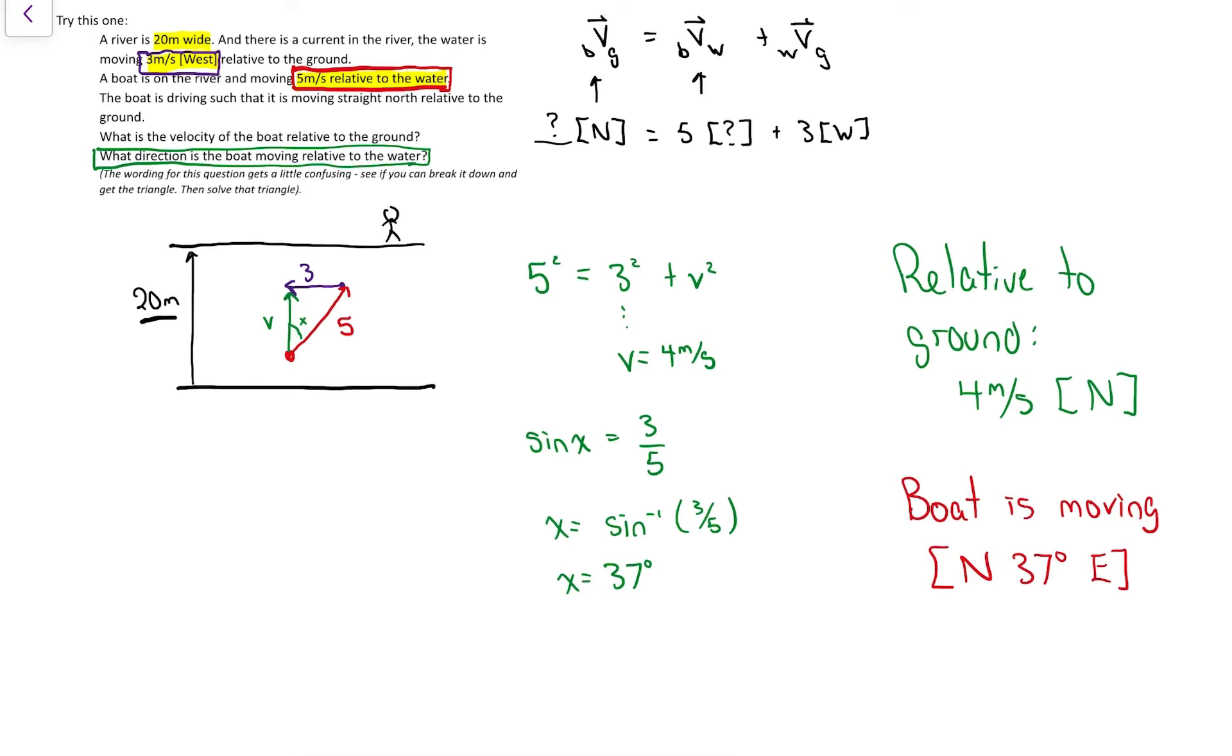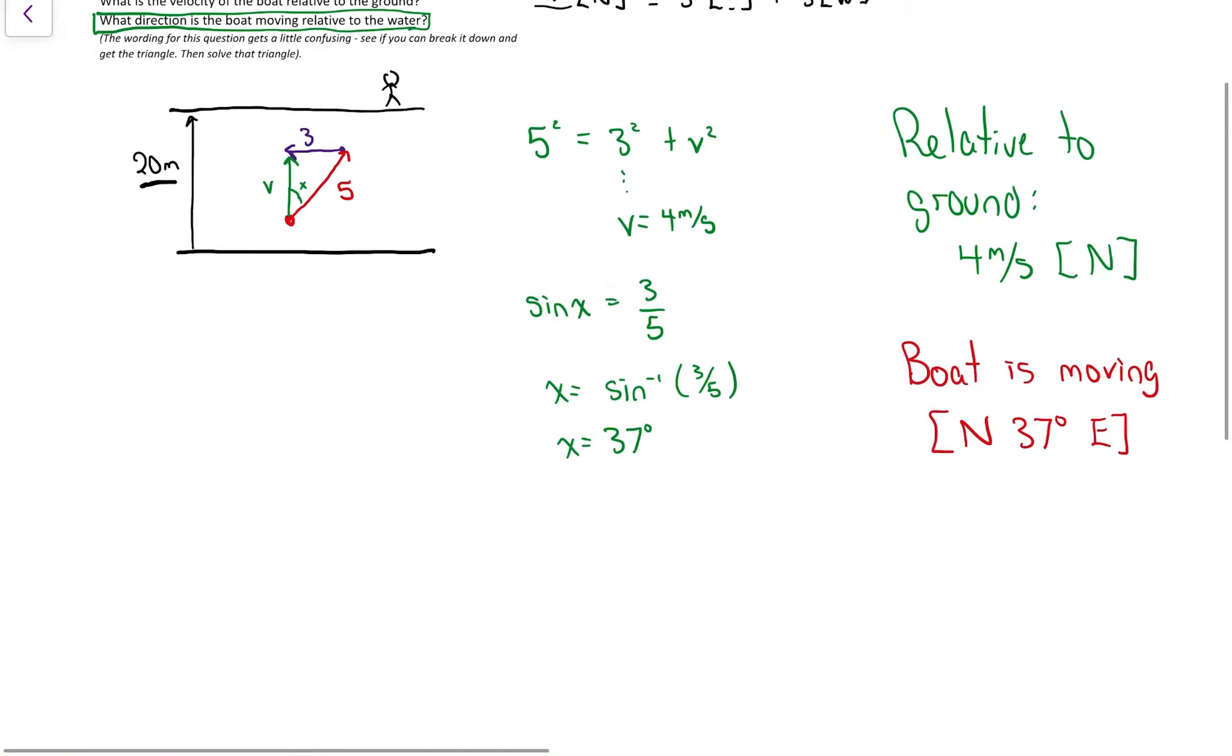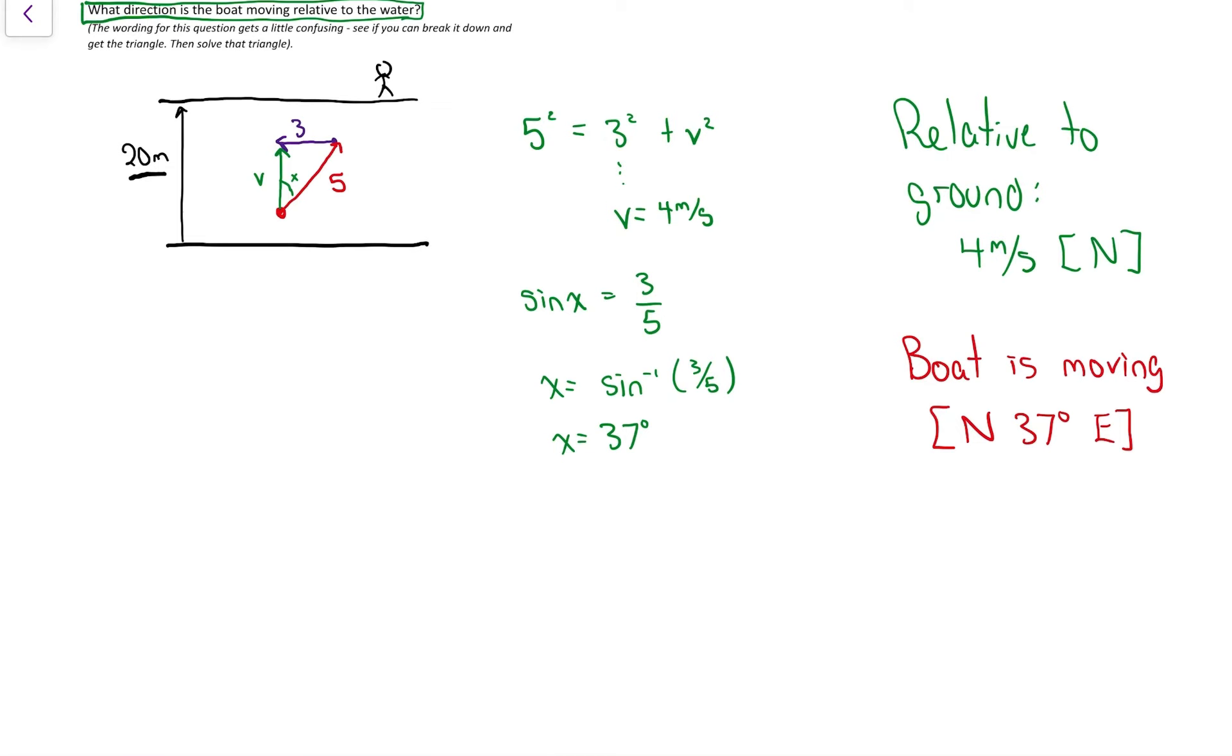The question didn't ask for it, but if we cared, so another part we could do, the river is 20 meters wide. The boat is going 4 meters per second as seen from the ground. So from those two things, it's got 20 meters to travel and it's traveling at a rate of 4 meters every second. You can use your V equals D over T idea or a little bit of logic.